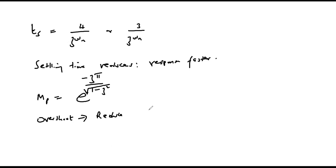However, the output has a nonzero steady state error when used on type 0 first order systems, and therefore the proportional plus derivative control action does not improve steady state performance of type 0 systems and would not be the controller of choice for such systems. That concludes the discussion on the proportional plus derivative control action. Thank you for watching.